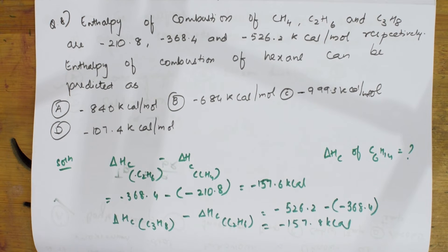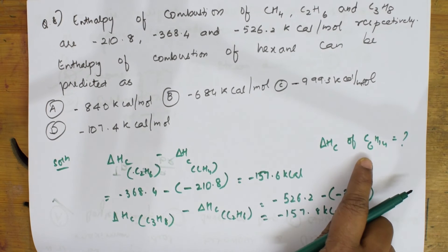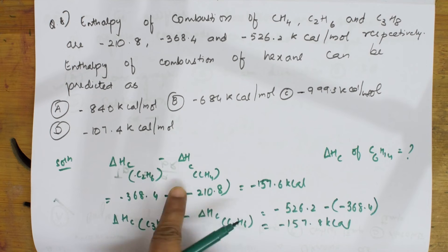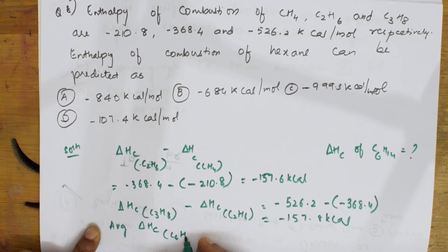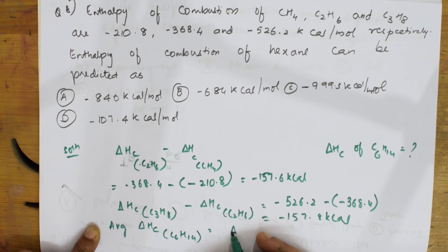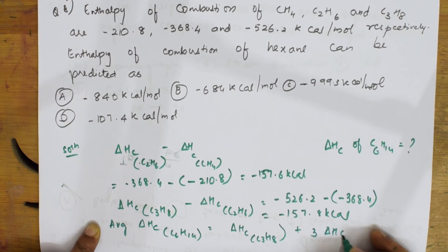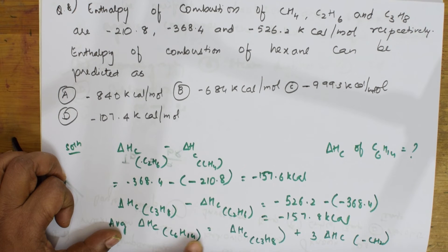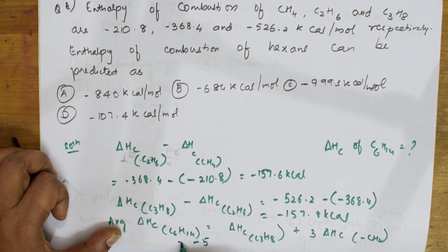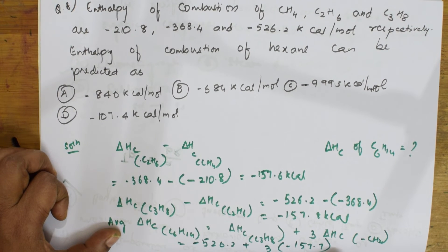Now I can find the average enthalpy for hexane (C₆H₁₄). Since hexane is C₆H₁₄, I write: average ΔH_c for C₆H₁₄ = ΔH_c(C₃H₈) + 3 × ΔH_c(CH₂). Substituting: −526.2 + 3 × (−157.7), then multiplying and adding.